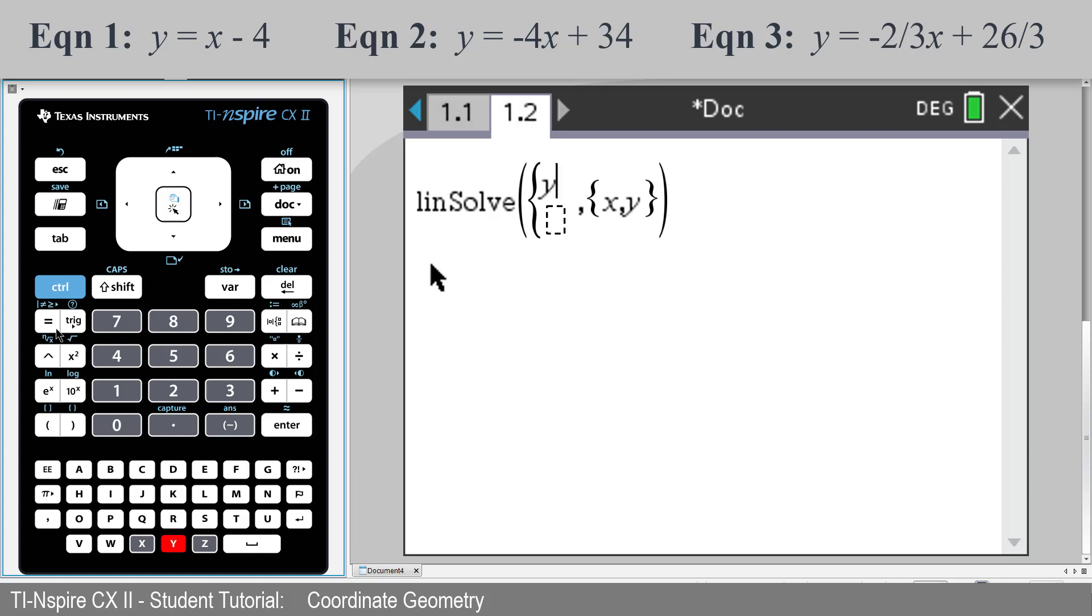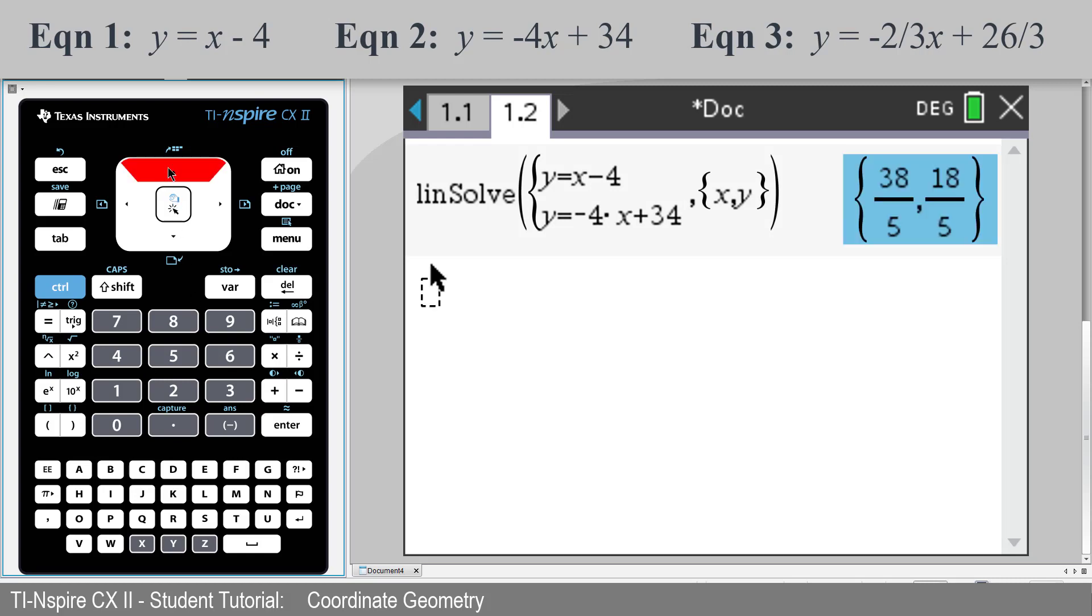Our first equation, Y equals X minus 4. Tab down to the second equation. Y equals negative 4X plus 34. And we see that the point of intersection is 38 over 5 and 18 over 5.